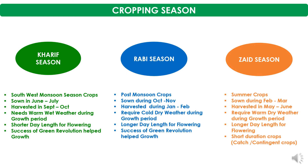Rabi crops have the nature of longer day length for flowering. The success of the Green Revolution also helped the growth of Rabi crops, as wheat had significant impact in growth and improvement in productivity because of the Green Revolution.